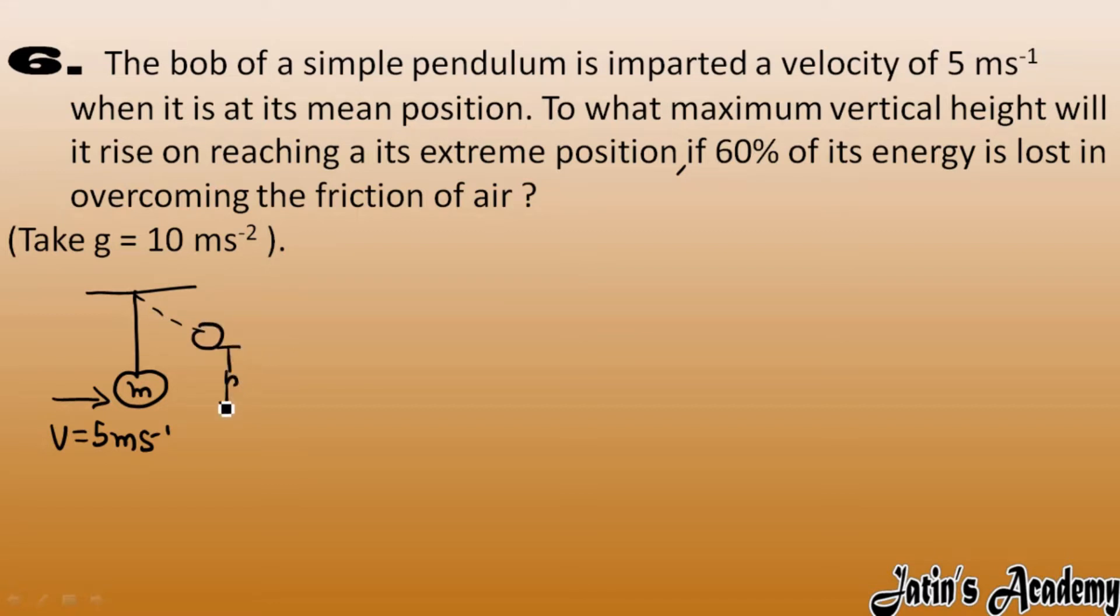Now here carefully see, initially the bob we have given some velocity, so the initial energy this bob will get that is a form of kinetic energy which is half mv square. So half, mass value we have m here, mass is not given so we will take value as m only. Velocity we have 5 square, so 5 square we have 25 by 2 m.